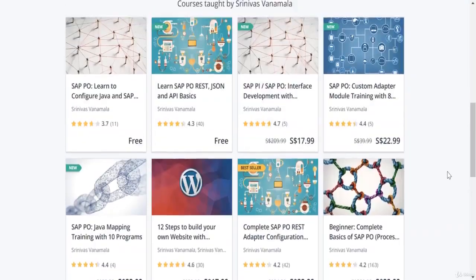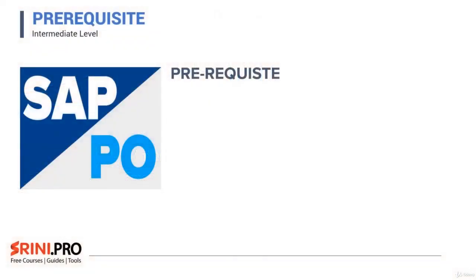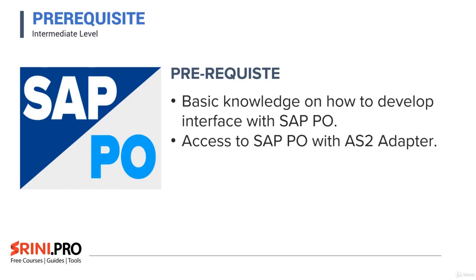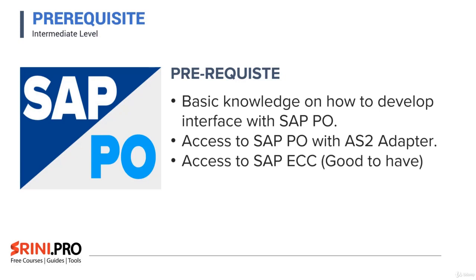Let's look at the prerequisites for this course. You need to have basic knowledge on how to develop an interface with SAP PO. This course will zoom in into the SAP AS2 adapter, so some knowledge is required on how to develop an interface and how to access the SAP PO tools. You need to have access to an SAP PO system on which the AS2 adapter is installed. Access to an SAP ECC system is good to have, but you can still learn without it. You will also need internet to download software like the Mac AS2 software or EDI notepad, whichever is shown in this course.